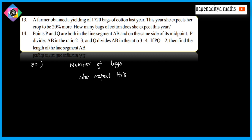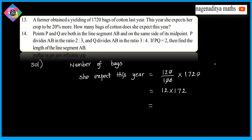This year's bags is equal to 120 by 100 into 1720. So this is equal to: cancel zeros, 1230 — multiplied 172 by 12. 12 twos are 24, 12 sevens are 84, 84 to 86.